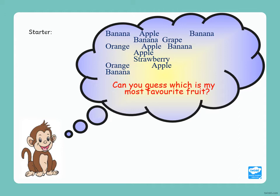Yes, I can see that there are five apples, four bananas, two oranges, one grape, and one strawberry. The most favorite fruit of monkey is apple.